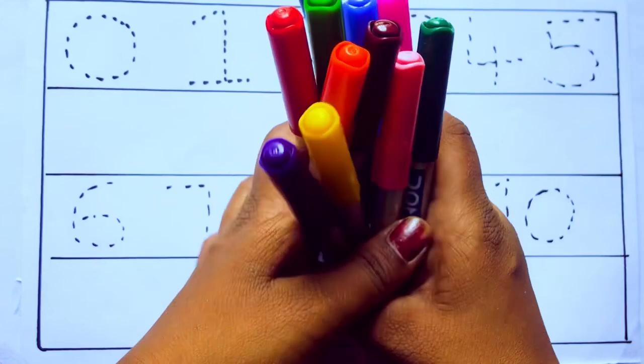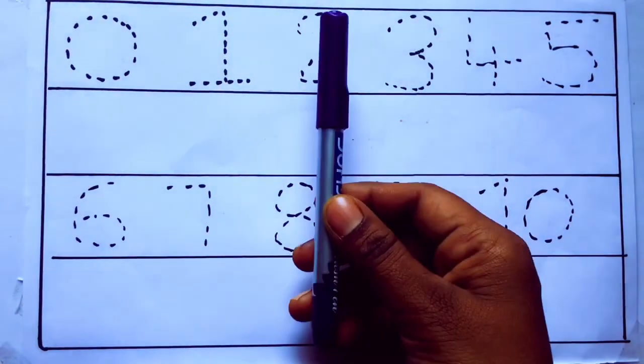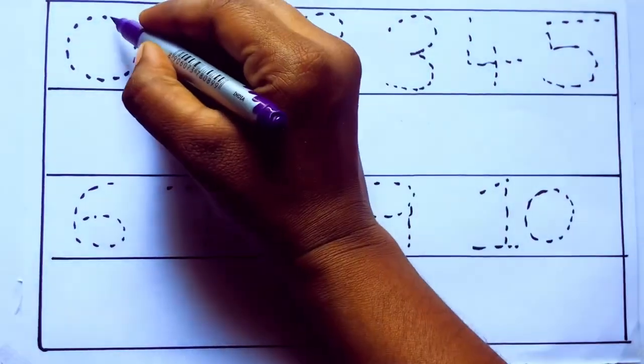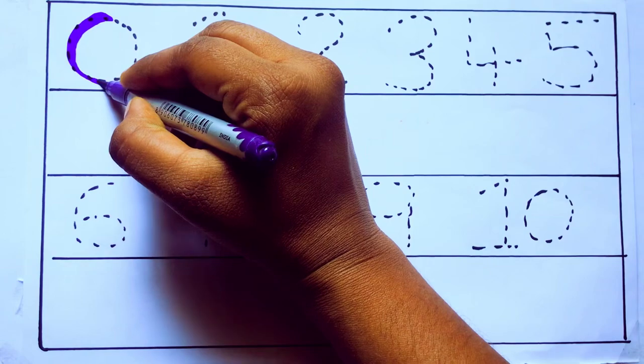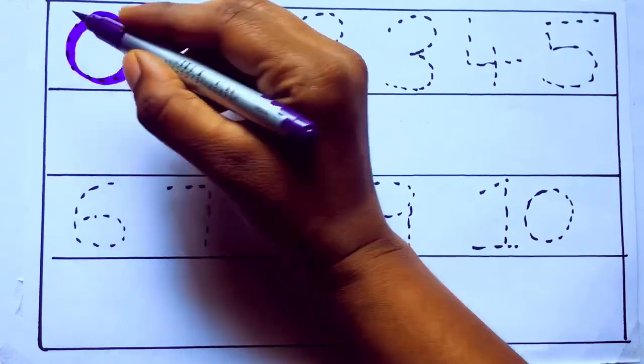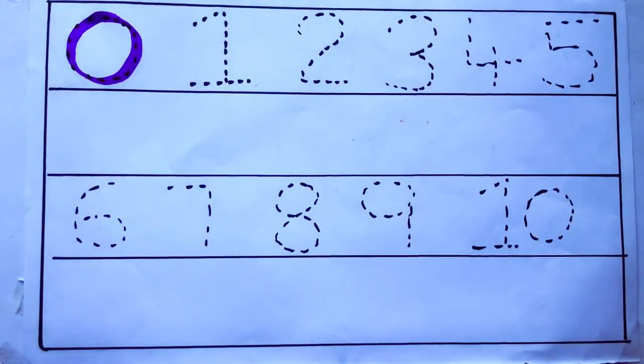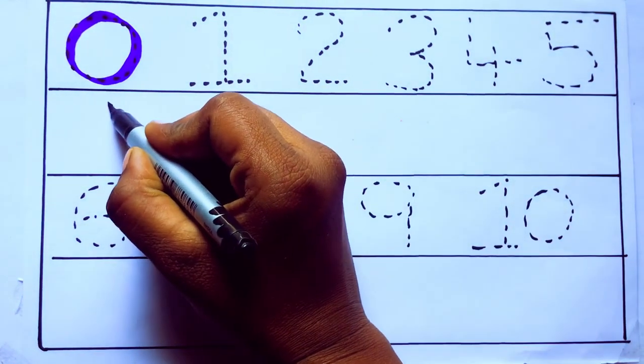Let's draw numbers. Violet color zero: Z-E-R-O. Violet color 0.